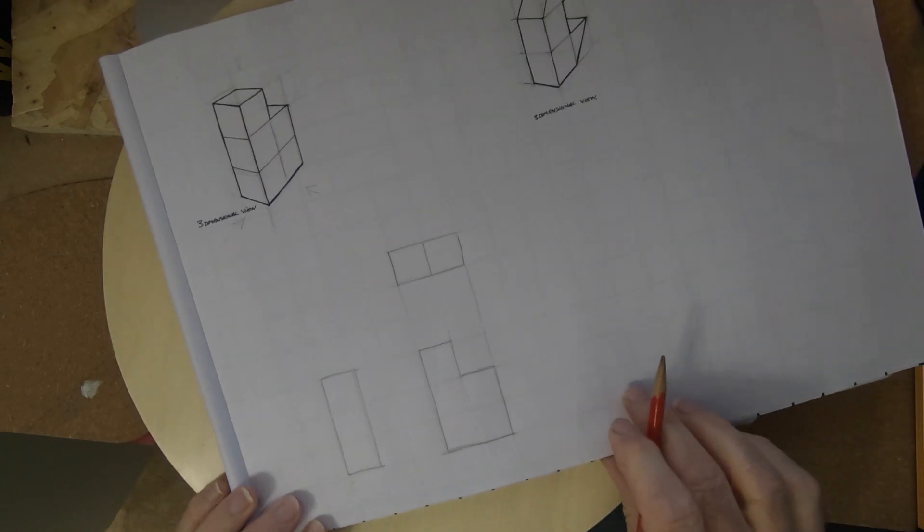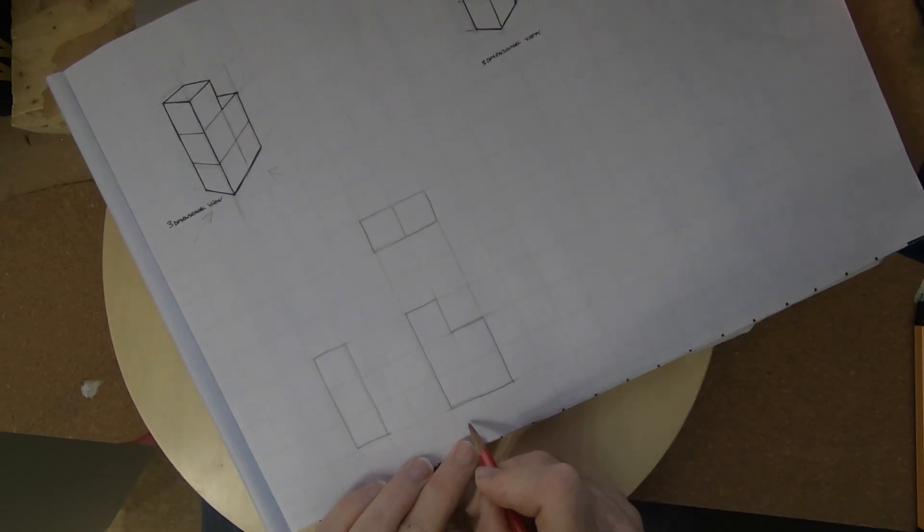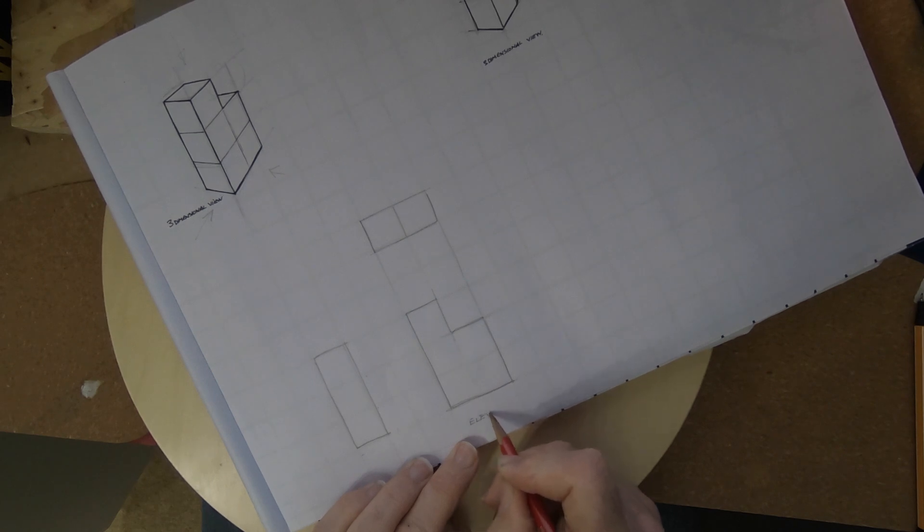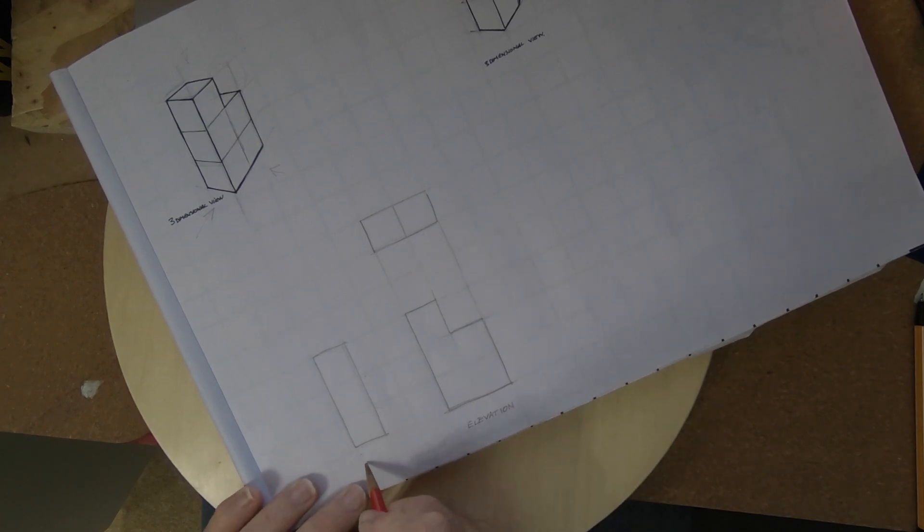Very simple using square paper behind just as a help to push that idea forward a little bit. We'll have the elevation, we'll have the end elevation, and of course we've got the plan up above.